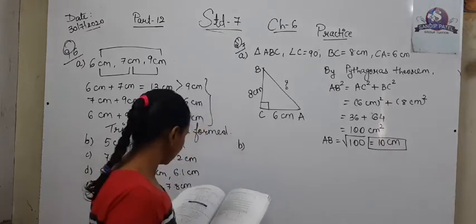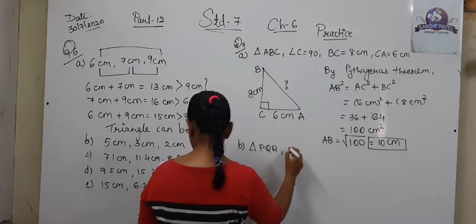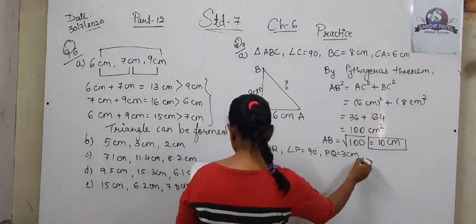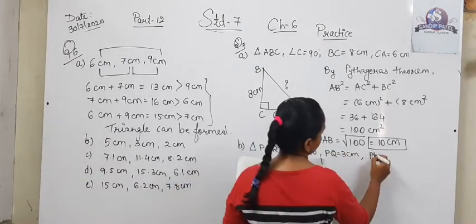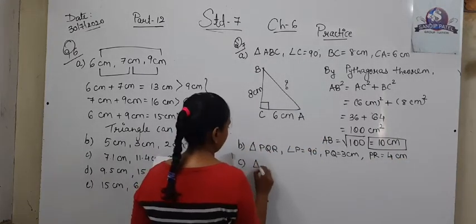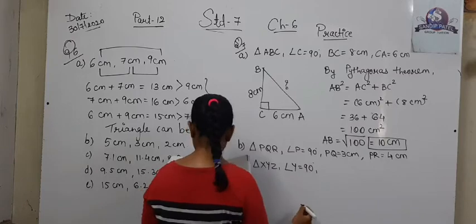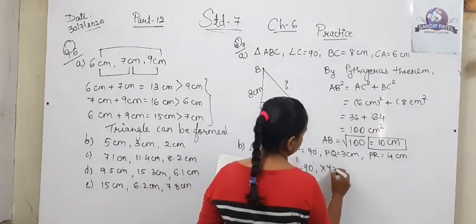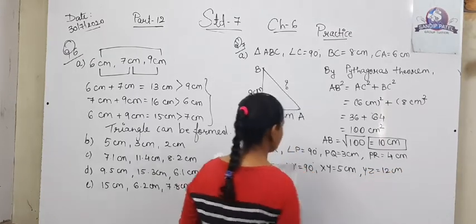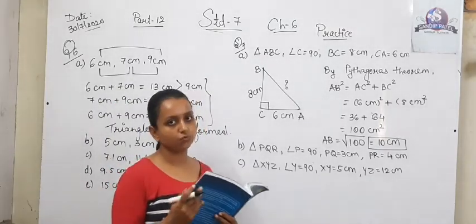The other two sums are given for homework. Triangle PQR: angle P is equal to 90 degrees, PQ is equal to 3 cm, and PR is equal to 4 cm. Next is triangle XYZ: angle Y is equal to 90 degrees, XY is equal to 5 cm, YZ is equal to 12 cm. These sums (B and C) you need to do as homework.